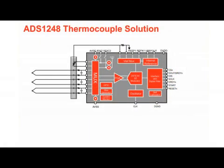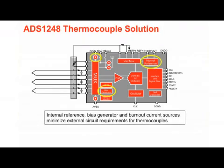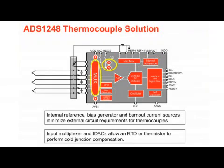For thermocouples, the ADS1247 and ADS1248 have all of the necessary parts included in the ADC. They include a low drift, high accuracy internal reference with better than 100 ppm long term stability, a common point bias generation, and burnout detection. The input multiplexer allows any input configuration to be selected and can be configured with the integrated IDACs to accommodate channels used with an RTD or a thermistor to accomplish cold junction compensation.